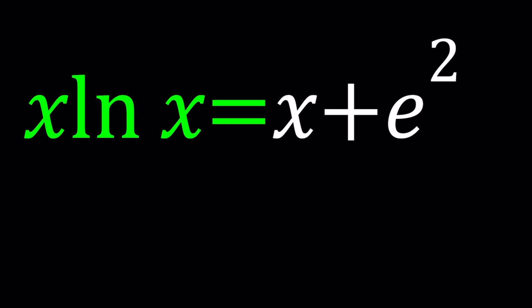We have x times ln x, ln being the natural log with base e, equals x plus e squared, e being the Euler's number, which appears in log. So the base for ln is basically e, so that we kind of have e flavor on both sides.